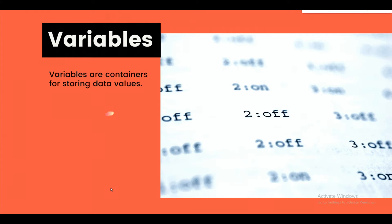String stores text such as 'hello world' — string values are surrounded by double quotes, while character values are enclosed in single quotes. Boolean stores a value with two states: either true or false. Now I'll explain the declaration of a variable.